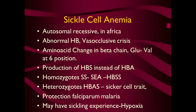Sickle cell disease is an autosomal recessive disorder commonly found in Africa. The hemoglobin is abnormal and patients commonly present with vaso-occlusive crisis. The amino acid substitution is at position 6 where valine replaces glutamic acid, producing hemoglobin S instead of hemoglobin A. The homozygous type is HbSS and the heterozygous variety is HbAS or HbSC. The HbAS variety is known as sickle cell trait, a milder disease, while the homozygous HbSS is severe. Sickle cell anemia patients have protection from falciparum malaria.